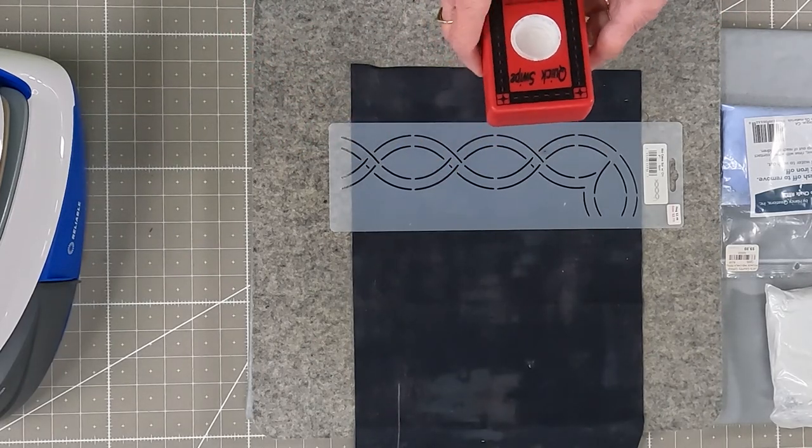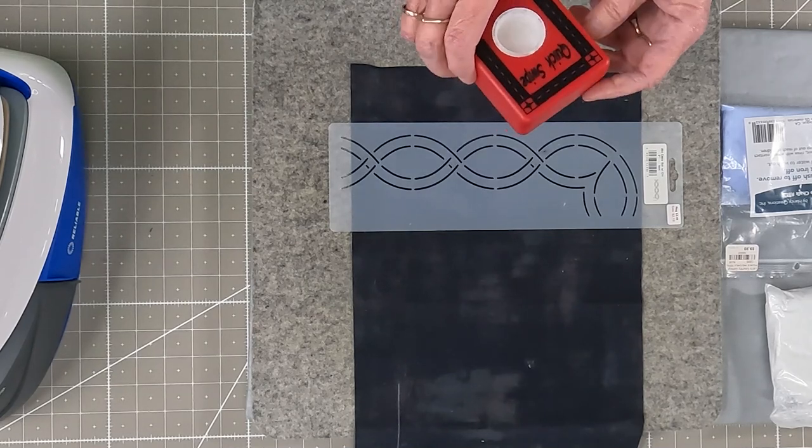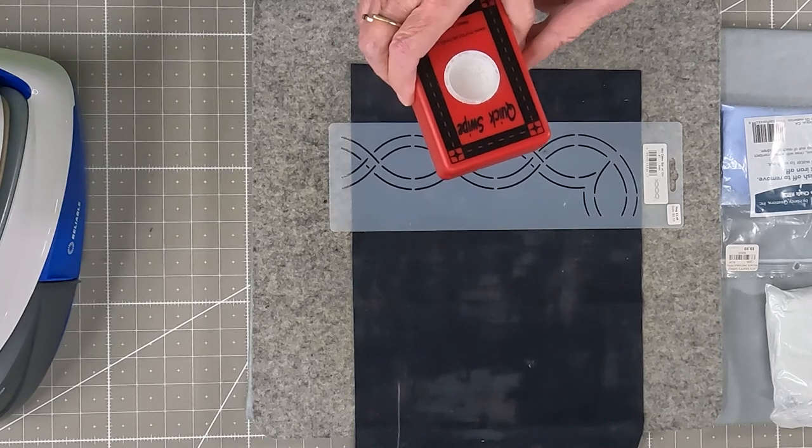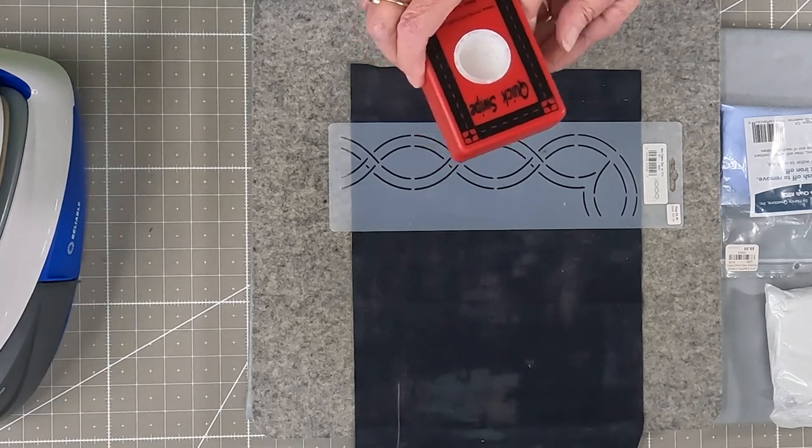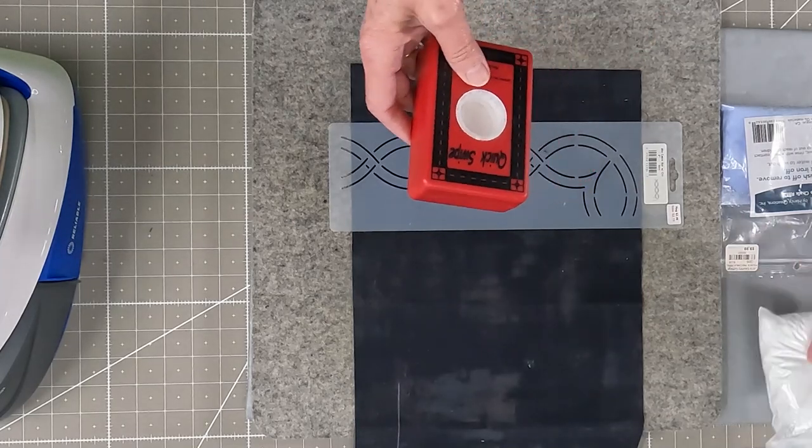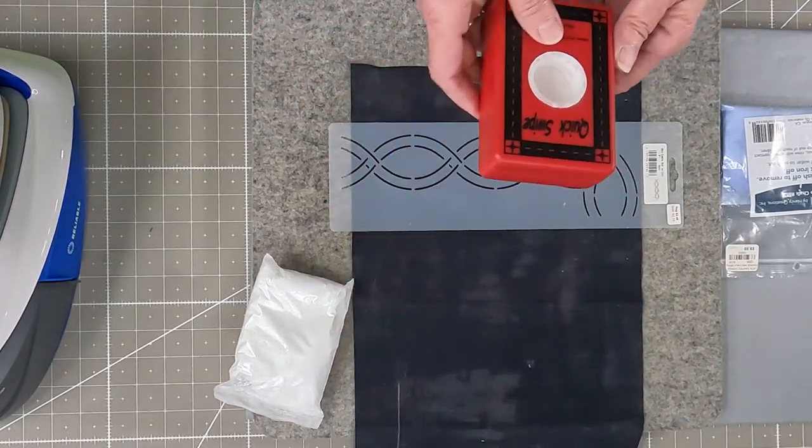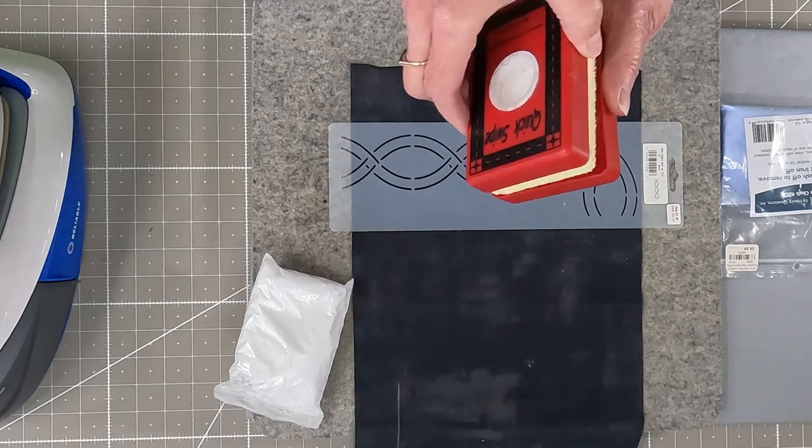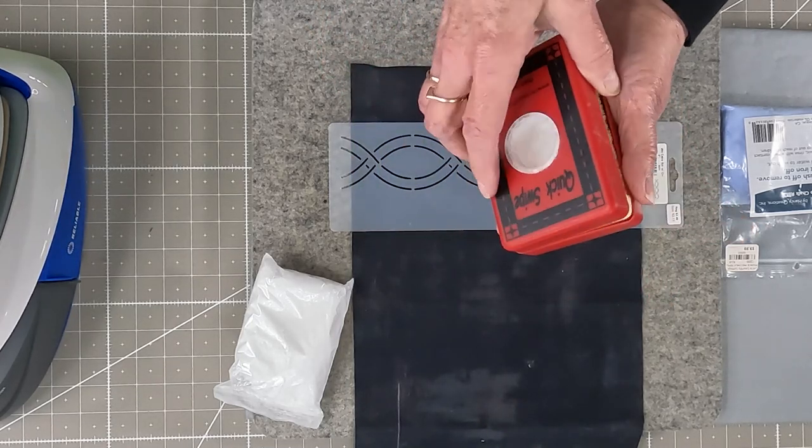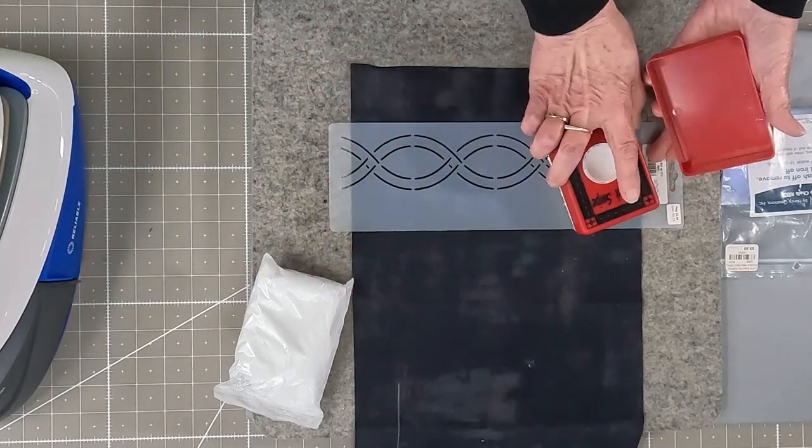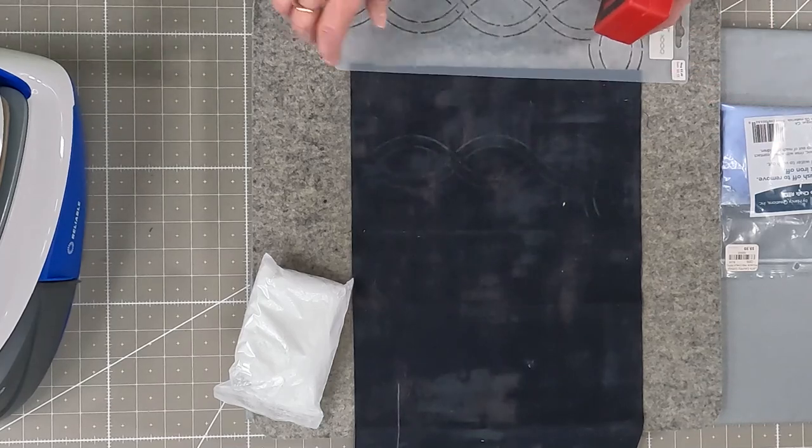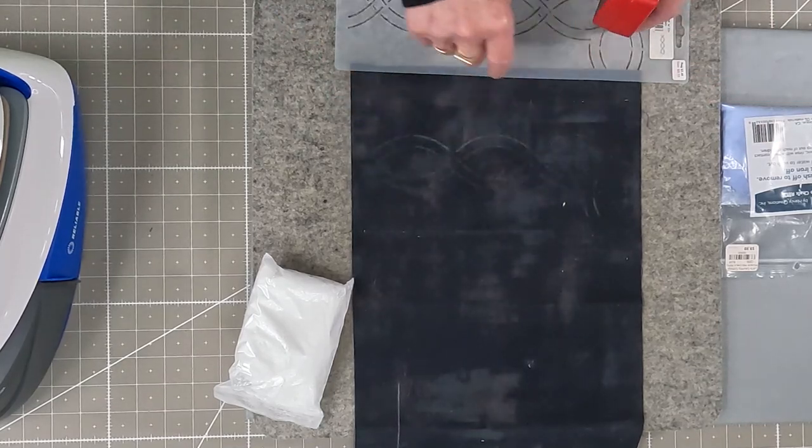The first item I want to show you is called Miracle Chalk Quick Swipe Pad. This is perfect for marking your quilts for your free motion quilting. Inside, it contains powder, which is referred to as pounce. All you do is fill it up, shake it to get the stuff down, take it and swipe it onto your fabric. And then you have the outline of your stencil.